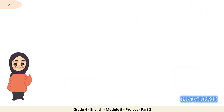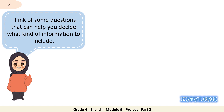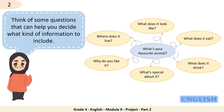Writing tip number 2: think of some questions that can help you decide what kind of information to include in your paragraph. Look at these questions. Whenever you want to write about your favorite animal, you would look for: Where does it live? What does it look like? What does it eat? What does it drink? What's special about it? And why do you like it?